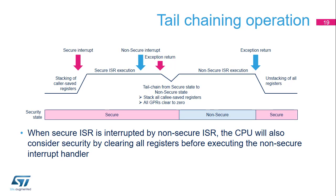This sequence details the tail-chaining from a secure interrupt service routine to a non-secure interrupt service routine. At the beginning, the processor runs in secure state when a secure interrupt is requested; the microcode saves the caller-saved registers to the secure stack. Then a non-secure interrupt is requested. When the exception return instruction is executed at the end of the secure ISR, the microcode for tail-chaining automatically saves all callee-saved registers to the secure stack so that all general-purpose registers (GPRs) have been saved. All GPRs are automatically cleared to zero prior to starting the non-secure ISR. At the end, when the exception return instruction is executed, the microcode restores all GPRs from the secure stack before resuming the secure application.